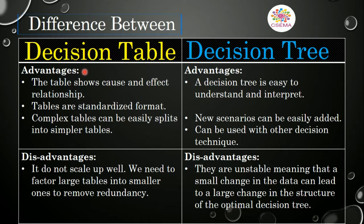Here are further differences between the decision table and the decision tree. Looking at the advantages of the decision table: it shows cause and effect relationships, uses a standardized format, and complex tables can be easily split into simpler ones. For the decision tree: it is easy to understand and interpret, new scenarios can be easily added, and it can be used with other decision techniques.